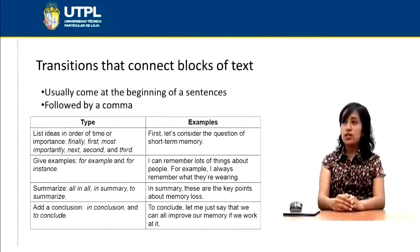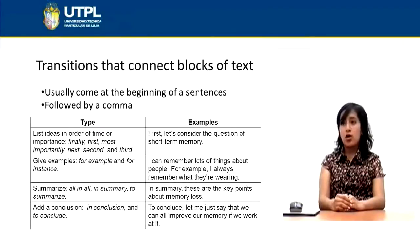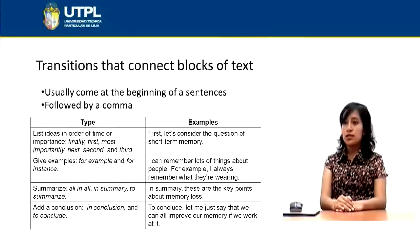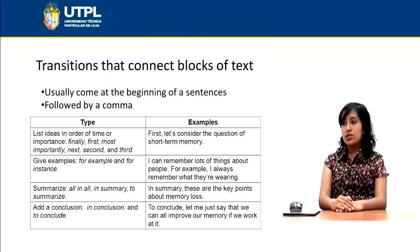Transitions that connect blocks of text usually come at the beginning of a sentence and are always followed by a comma. There are four types. To list ideas in order of time or importance, we have: 'finally,' 'first,' 'most importantly,' 'next,' 'second,' and 'third.' For example: 'First, let's consider the question of short-term memory.'